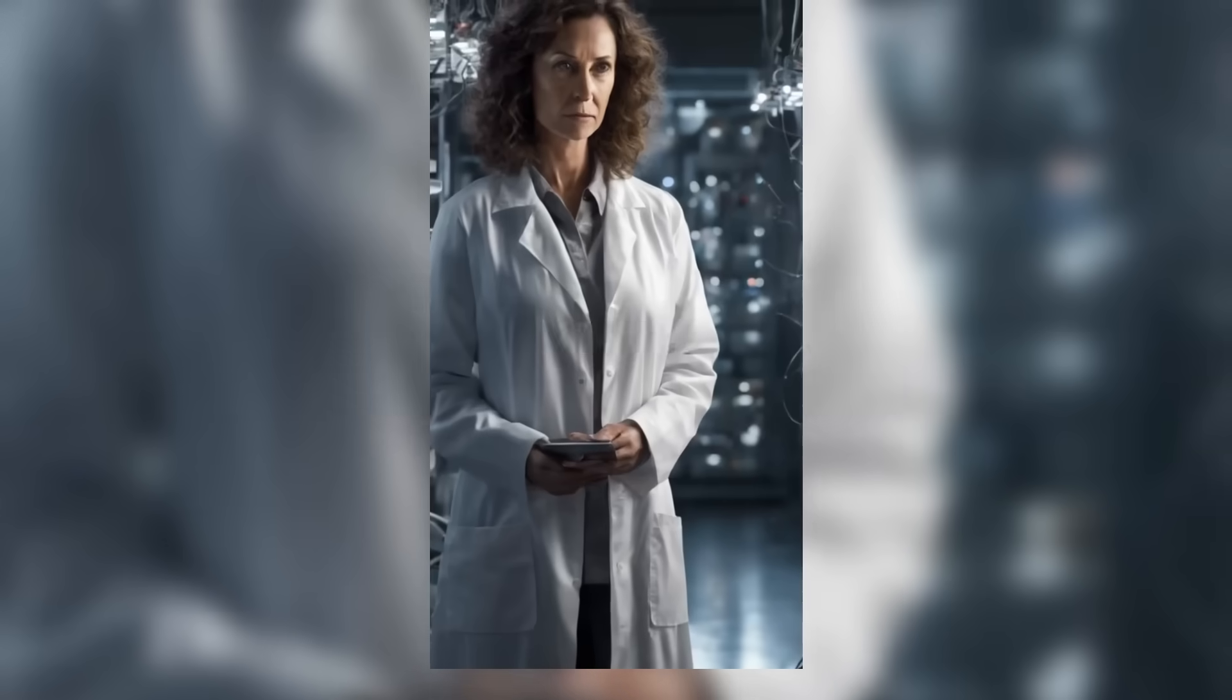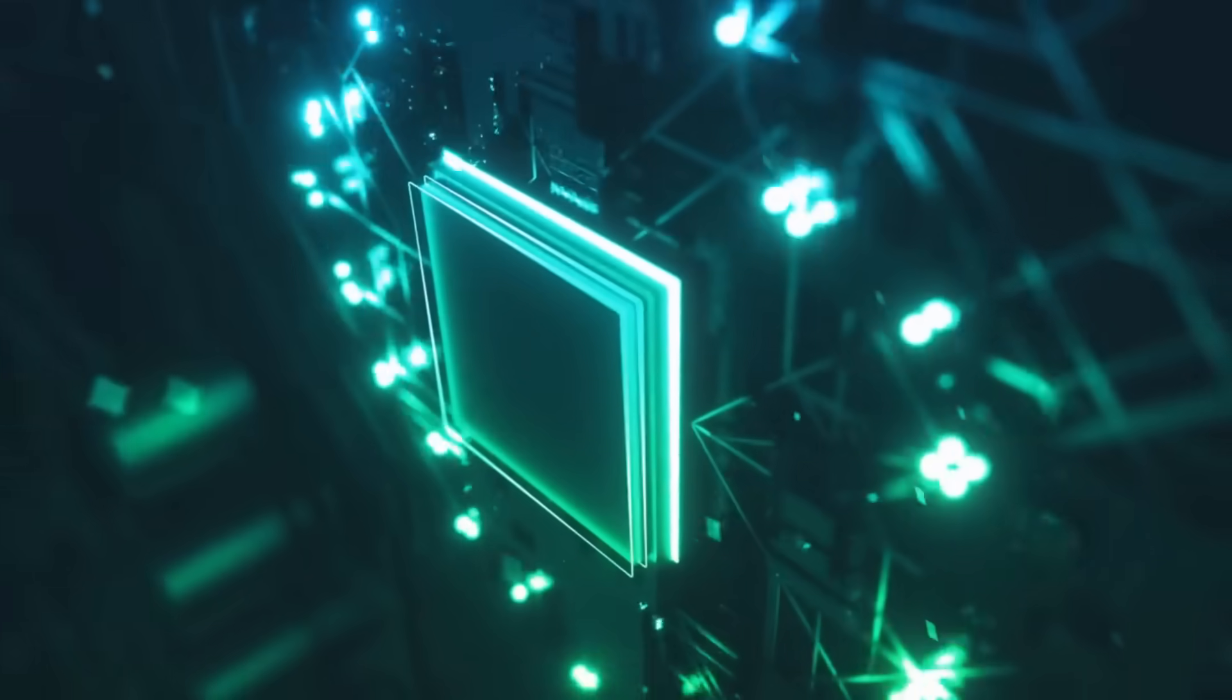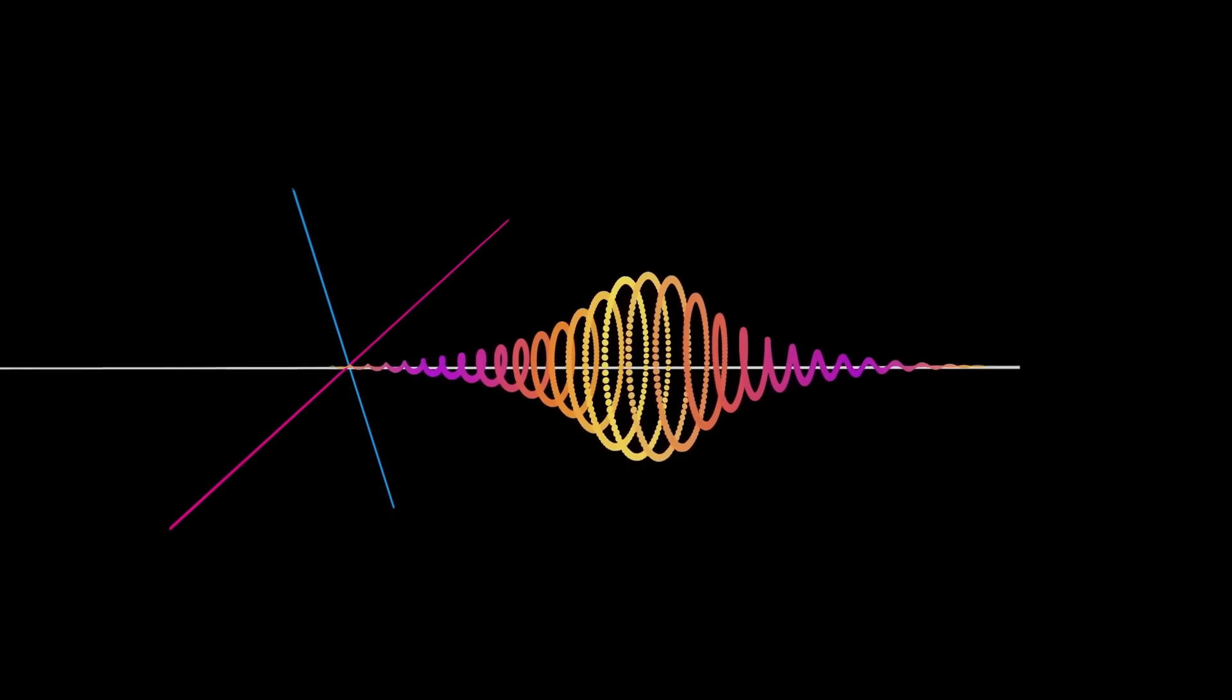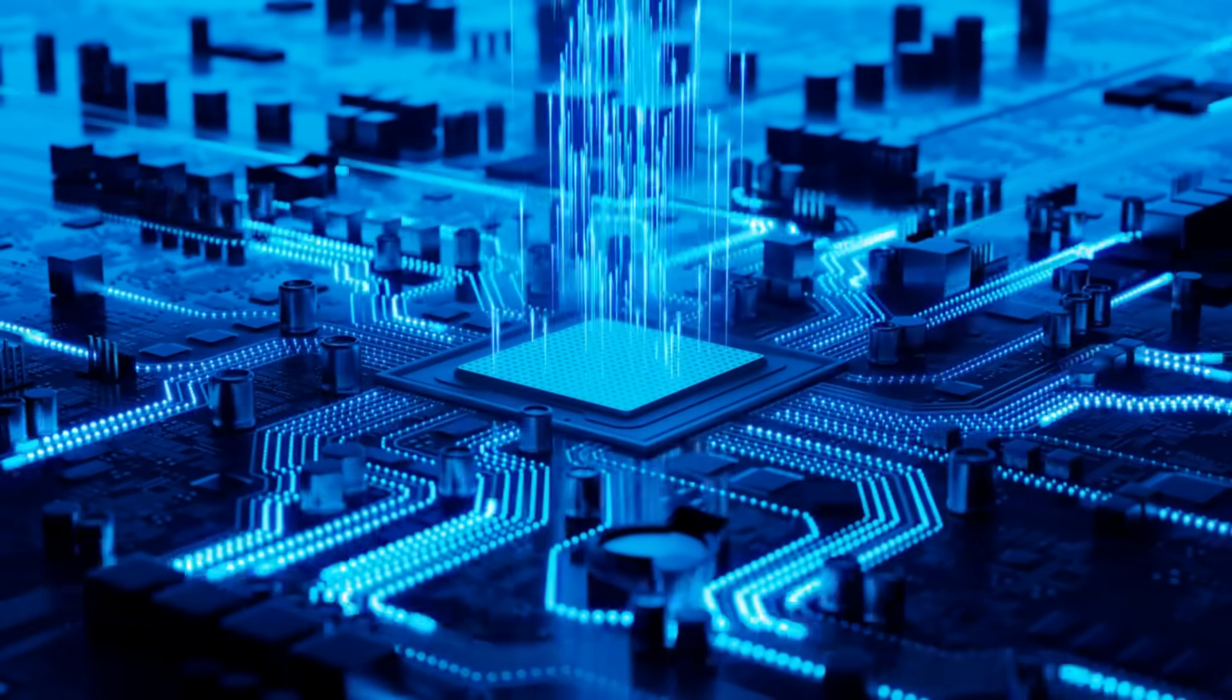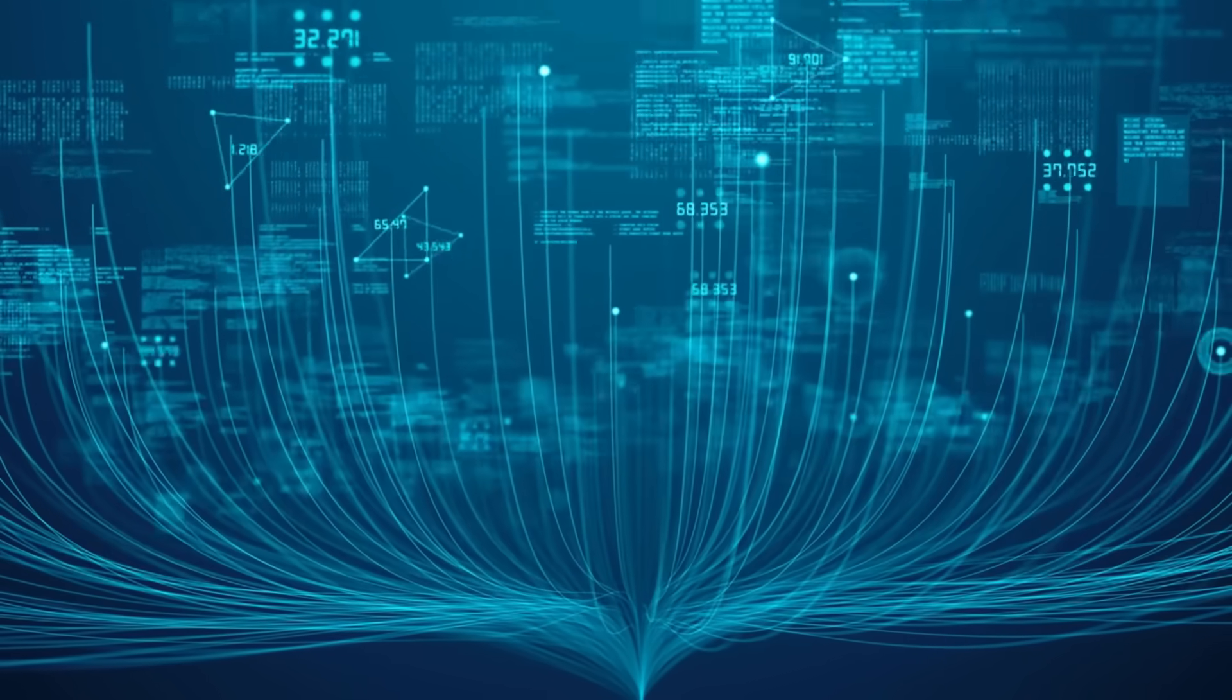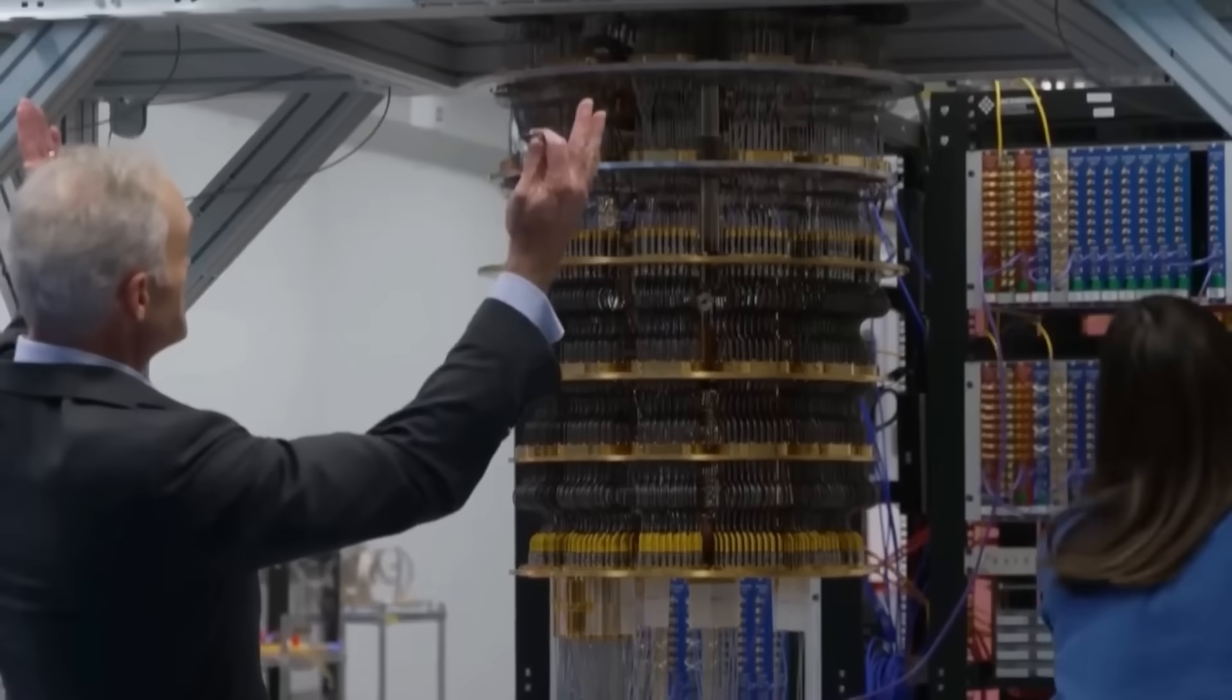The Fundamentals of Compton Scattering. Compton scattering is a well-documented phenomenon in quantum physics, describing how photons scatter off electrons. This interaction results in a measurable change in the photon's energy and direction, an effect that has been confirmed through countless experiments over the decades. The fact that such a process might be mirrored within a quantum chip is both revolutionary and perplexing.